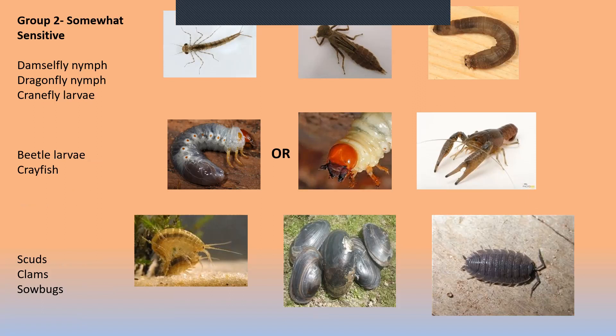Group two organisms are somewhat sensitive to pollutants. On the upper left, we have the damselfly nymph, and in the middle the dragonfly nymph. On the right, we have crane fly larvae. In late summer and early fall, there are large hatches of flying insects with very long legs that look like a very large mosquito — people often mistake them for giant mosquitoes, but they are crane flies. They have a very short lifespan of only a couple of weeks.